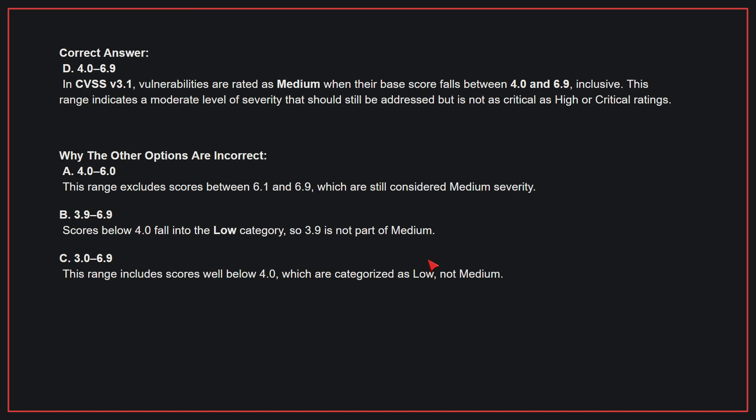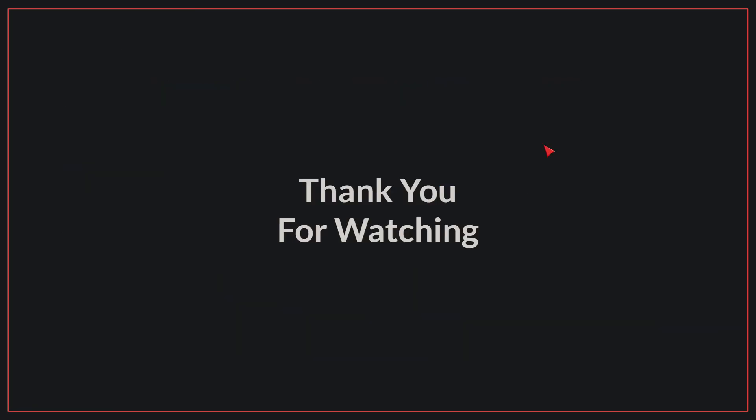Why the other options are incorrect? A: 4 to 6.X — this range excludes scores between 6.1 and 6.9, which are still considered medium severity. B: 3.9 to 6.9 — scores below 4.0 fall into the low category, so 3.9 is not part of medium. C: 3.0 to 6.9 — this range includes scores well below 4.0, which are categorized as low, not medium. Therefore, the correct answer is D. We have come to the end of today's video. If you liked the video, please make sure to like and subscribe. Goodbye!